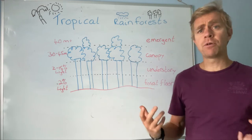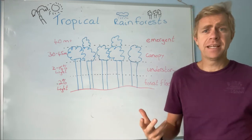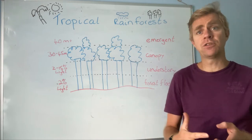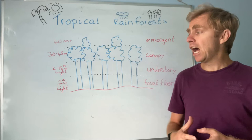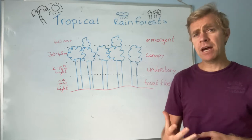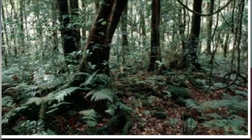At the very bottom is the forest floor — that kind of makes sense, it's the forest, it's on the floor. Interesting thing about it is there's only about 2% light. So for the sunlight that goes into a rainforest, only 2% makes it to the ground level because of all the leaves and the understory and everything above it that prevents it from coming down.